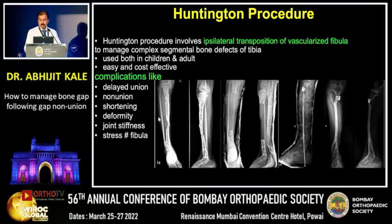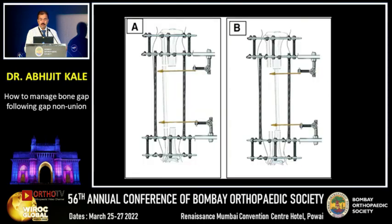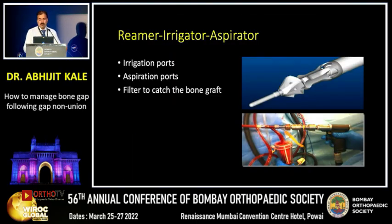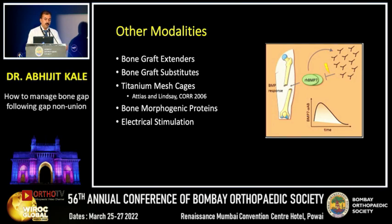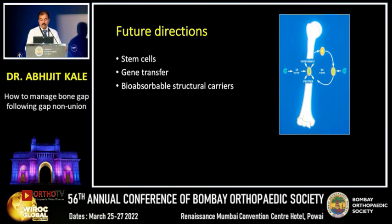Vascularized fibula has also been used to manage various congenital deformity cases. A known technique is the Huntington's procedure — ipsilateral transposition of the vascularized fibula to manage a complex bone segment — though complications include delayed union, non-union, or shortening. Other modalities include RIA (reamer-irrigator-aspirator) as a bone graft, titanium mesh, bone morphogenetic proteins, electric stimulation, and future possibilities in stem cell therapy and gene transfer.